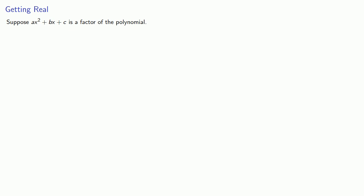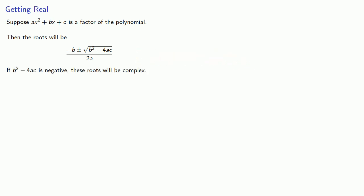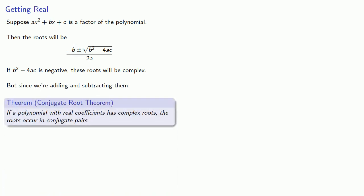Now suppose ax squared plus bx plus c is a factor of the polynomial. Then we can use the quadratic formula to find the roots. What's important here is that if b squared minus 4ac is negative, these roots will be complex. Since we're adding and subtracting them, this means that if a polynomial with real coefficients has complex roots, the roots occur in conjugate pairs.